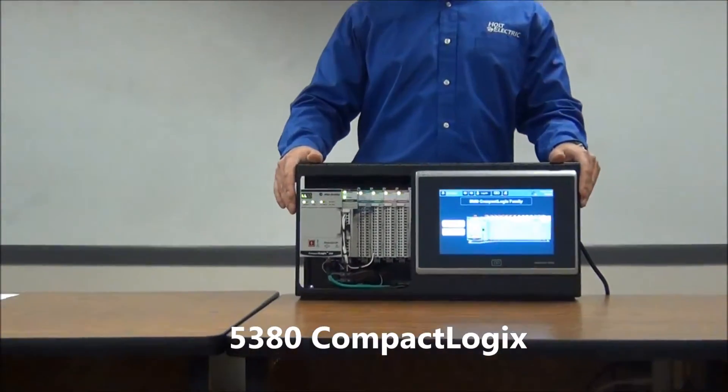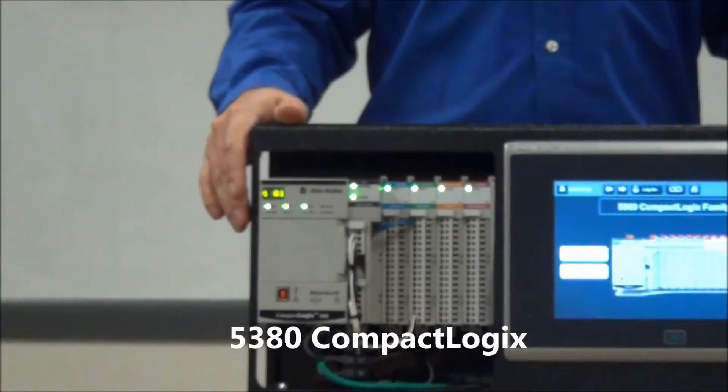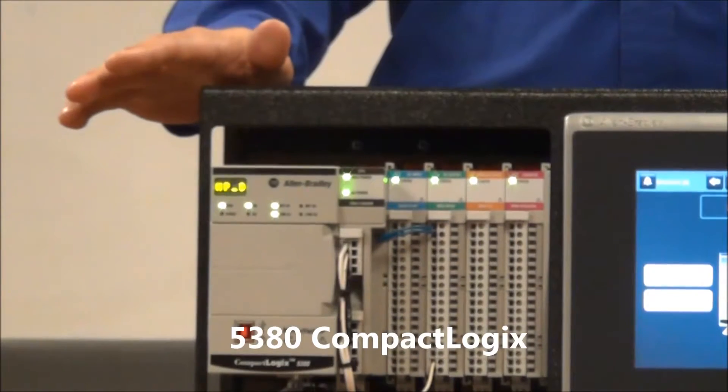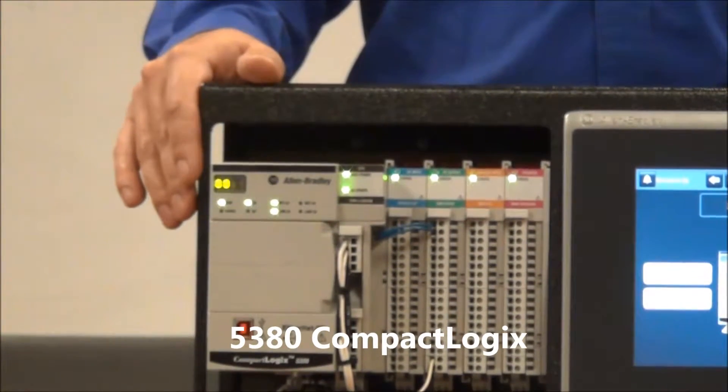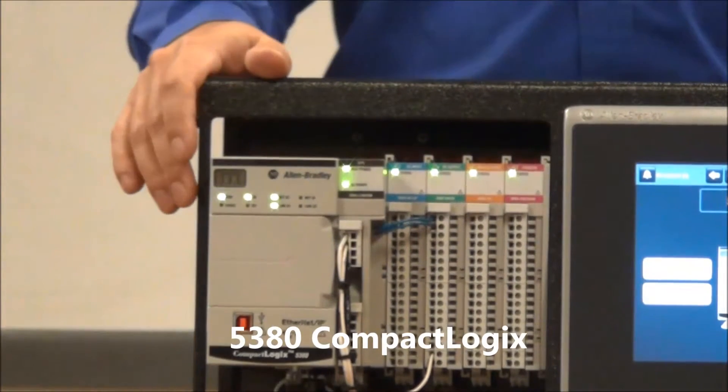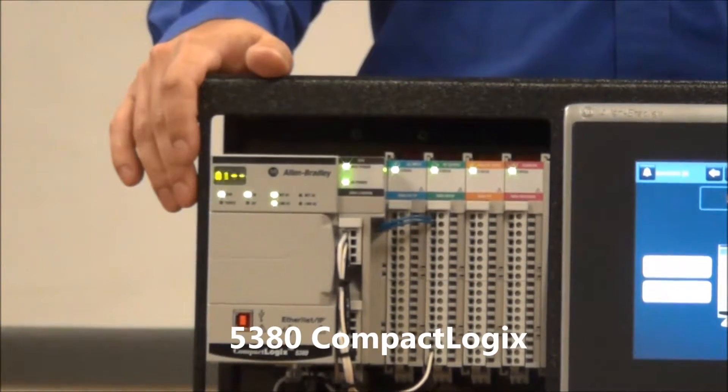Compared to the previous generation, this controller has average scan times that are 10 to 20 times faster. On top of that, it's capable of up to 20 axes of motion, up to 55 Ethernet nodes, and it has a scrolling display for diagnostics and seeing your IP address.